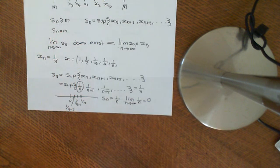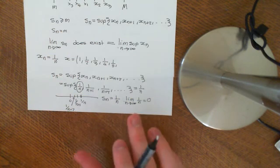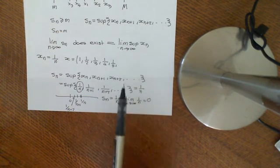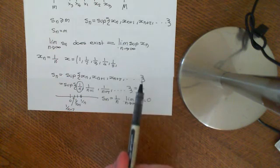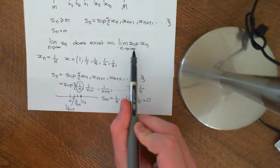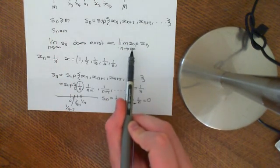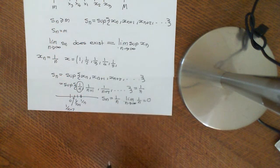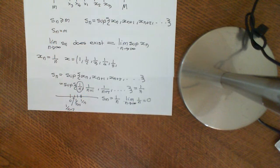In the next video, we will use this concept of lim sup and the fact that it always exists when Xn is a bounded sequence. We'll use that to prove that we can construct a convergent subsequence of any bounded sequence.